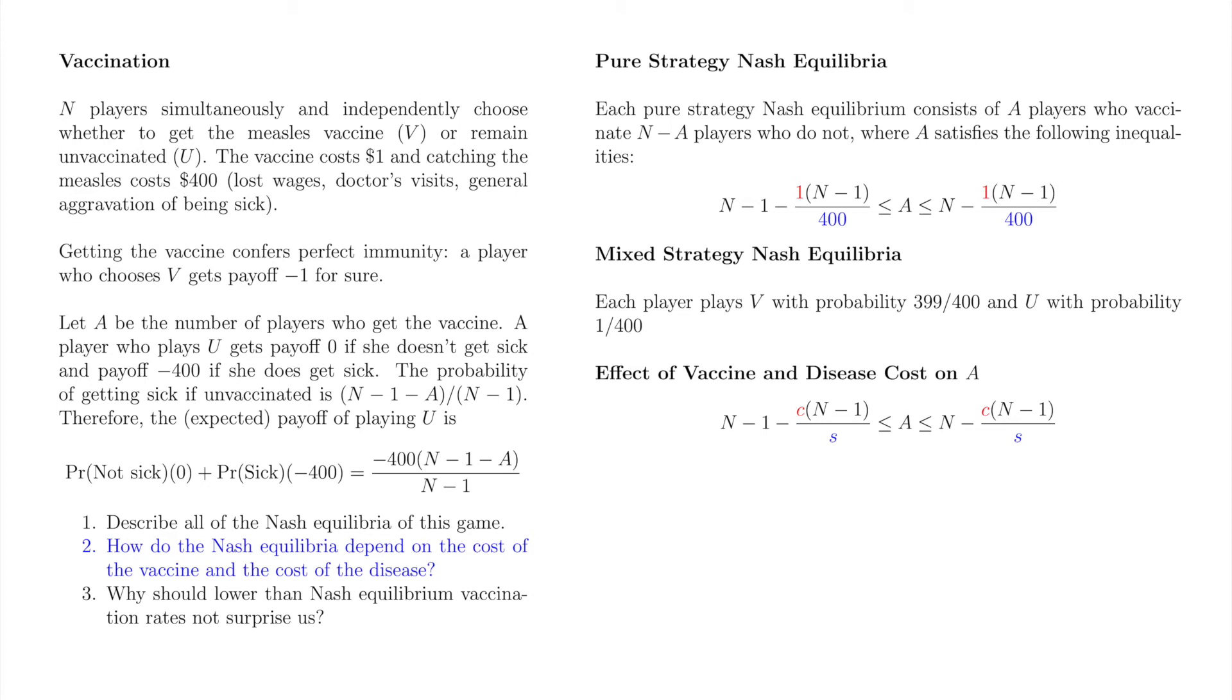We could use this model to study diseases other than measles. Intuitively, if the vaccine is cheaper or the disease is more costly, the Nash equilibrium vaccination rate should increase. On the other hand, if the vaccine is more expensive or the disease is less costly, the Nash equilibrium vaccination rate should decrease.